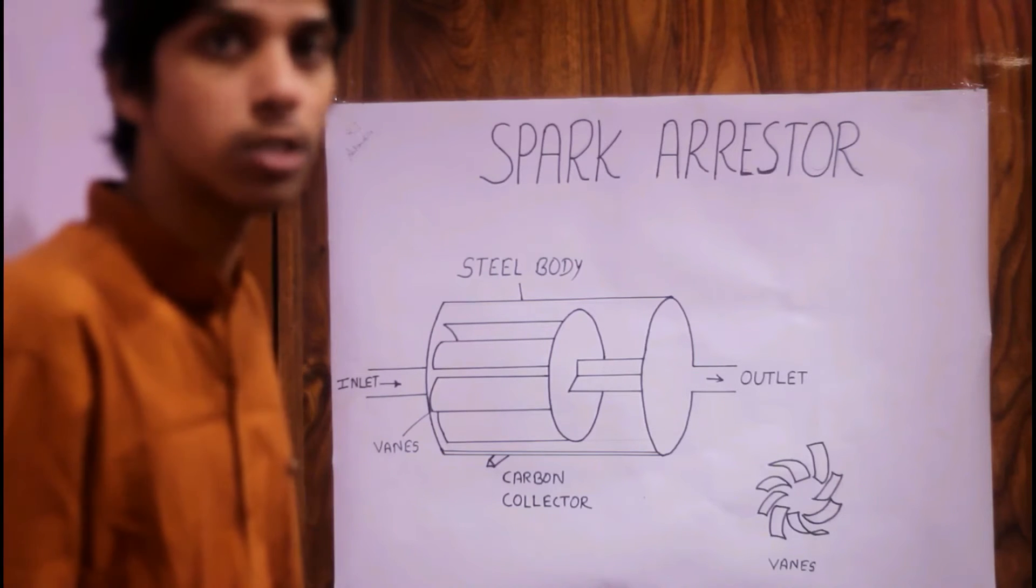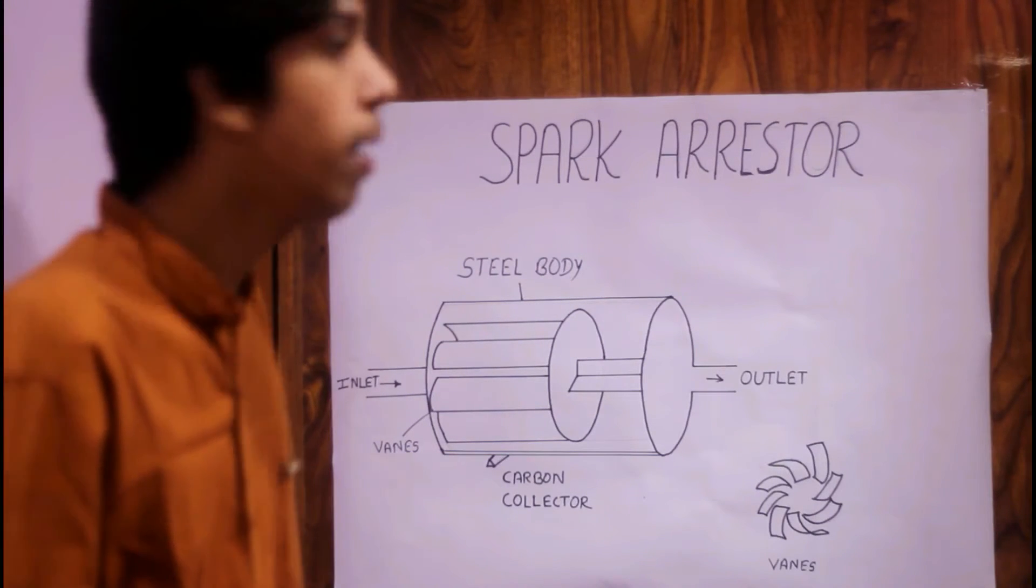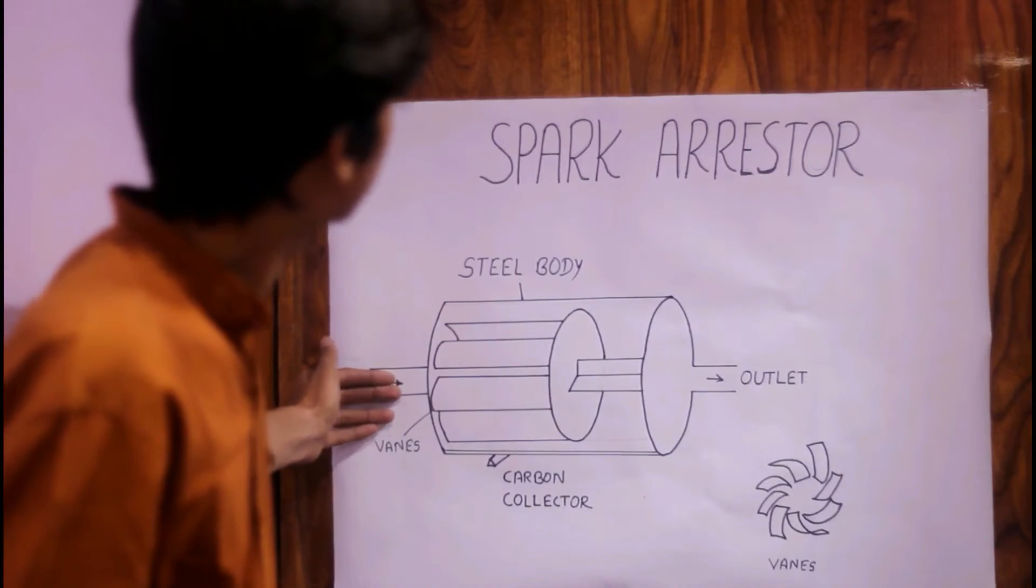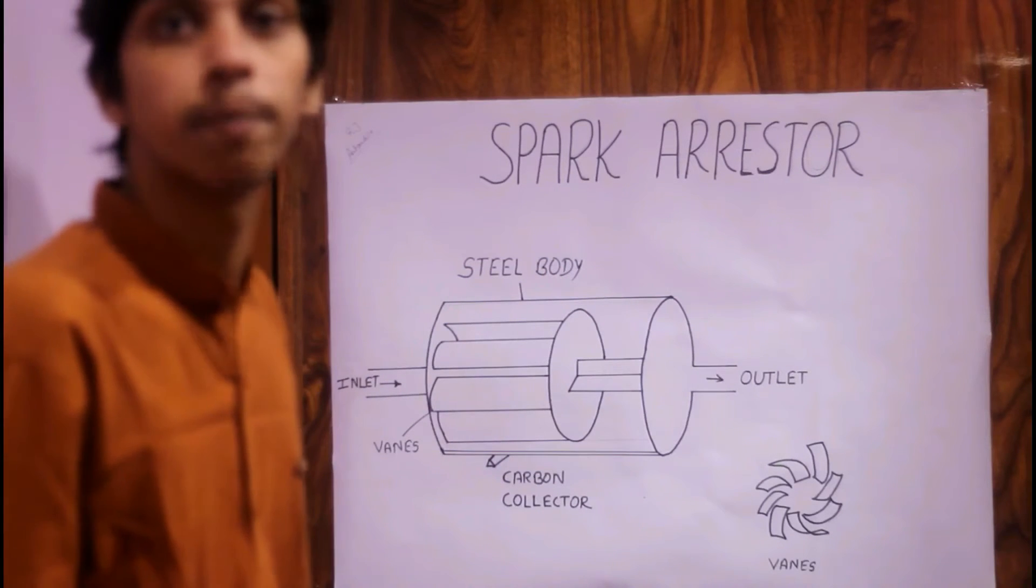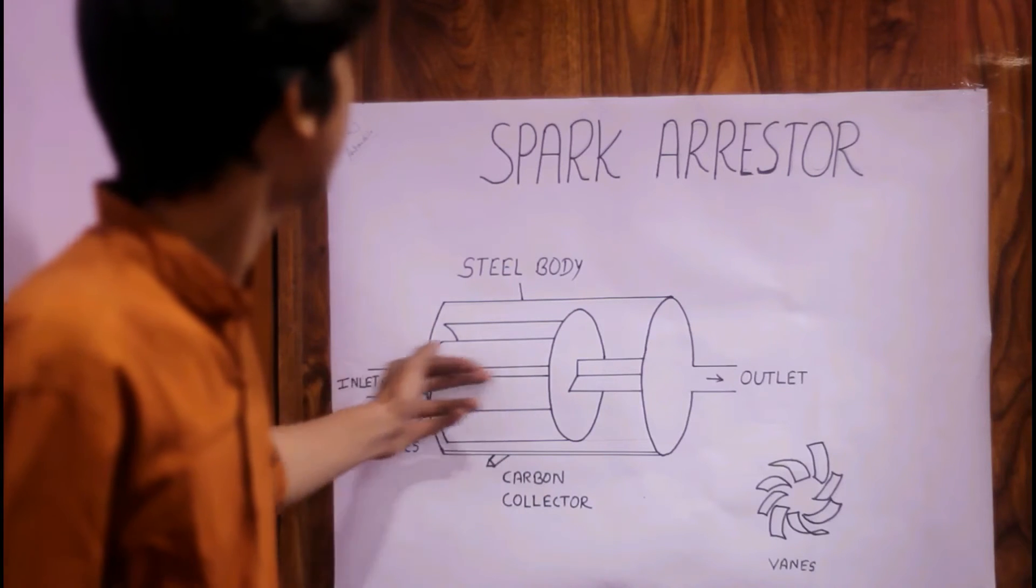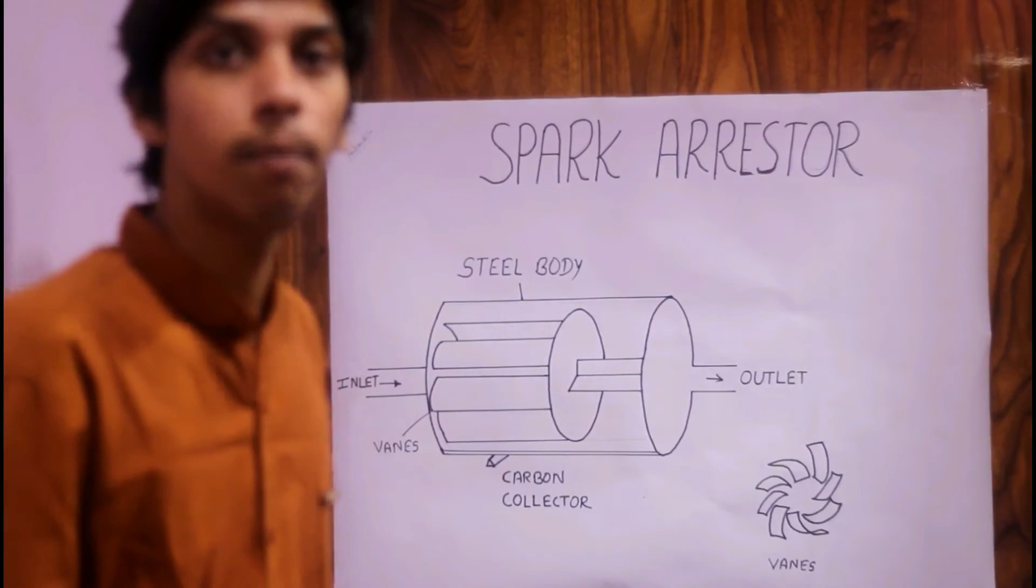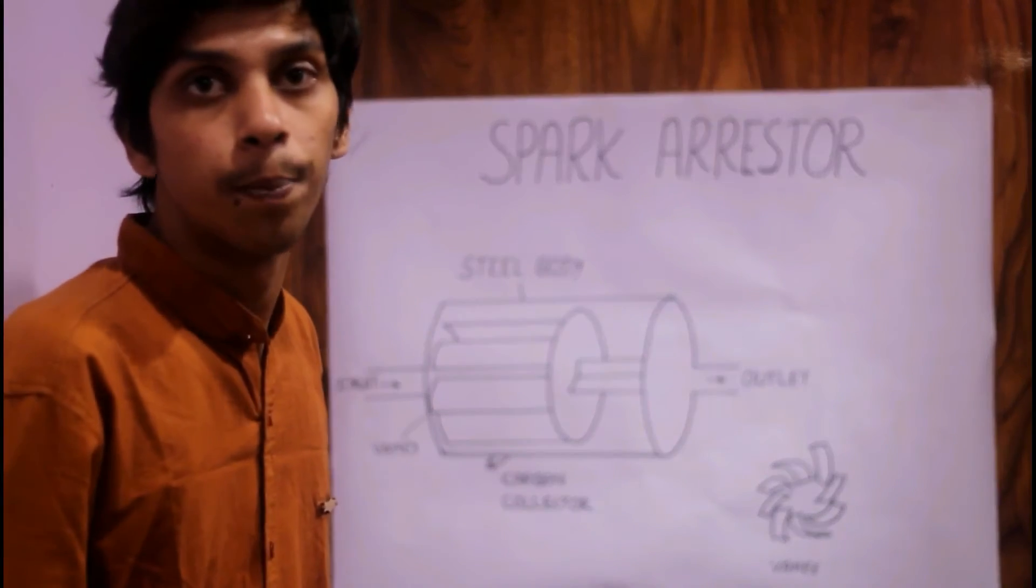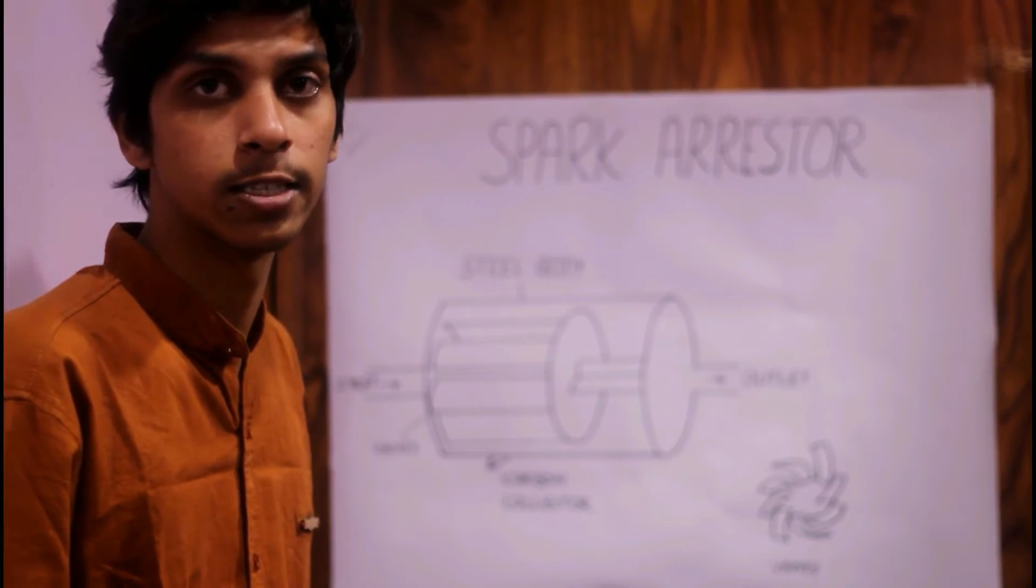When the exhaust gases come from the exhaust pipe, they directly go to the inlet and strike the center of this plate. Actually, the spark arrester is based on the centrifugal principle. When these exhaust gases strike this plate, due to the centrifugal effect, the flammable material like carbon is separated from the exhaust gases.